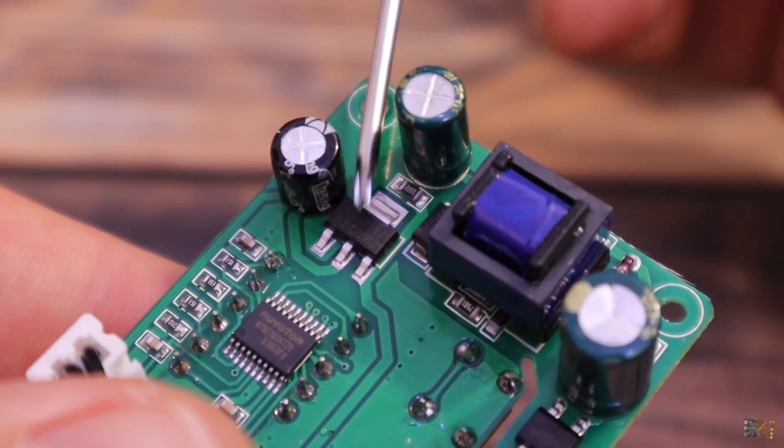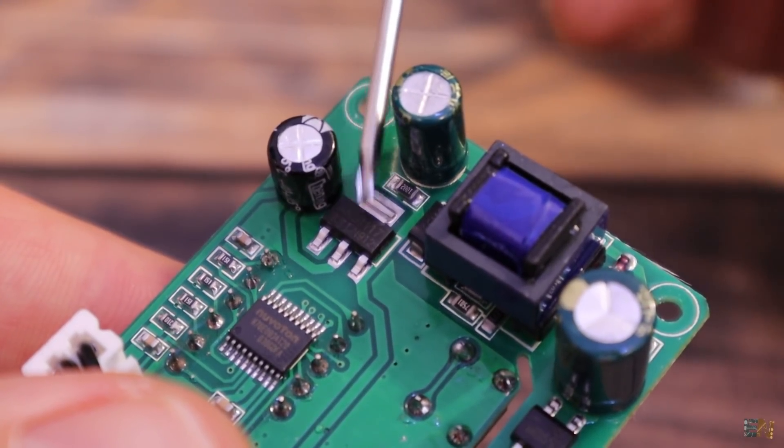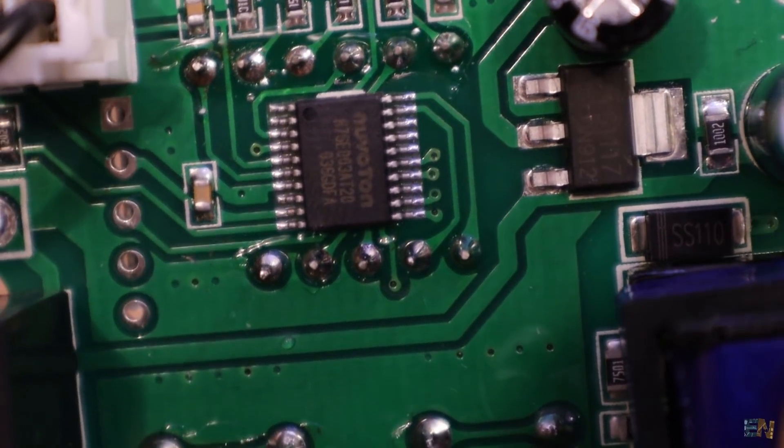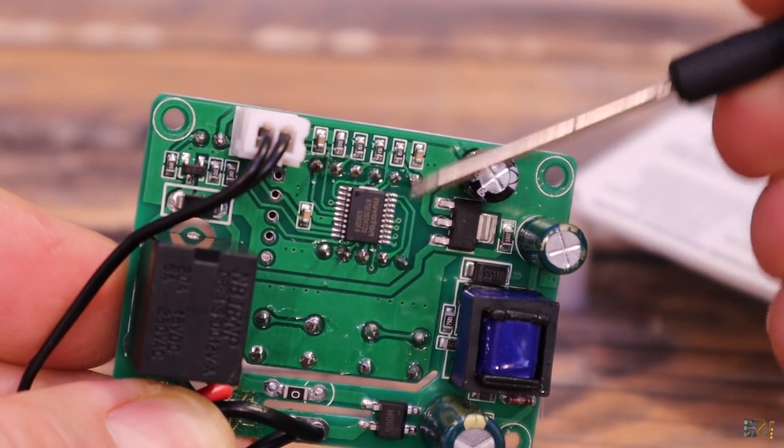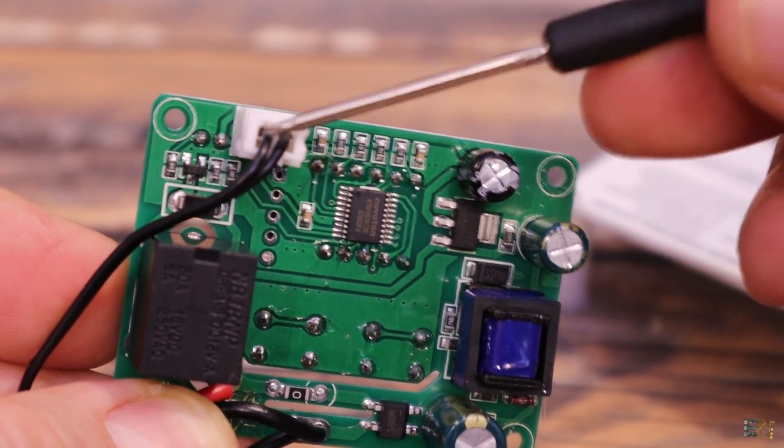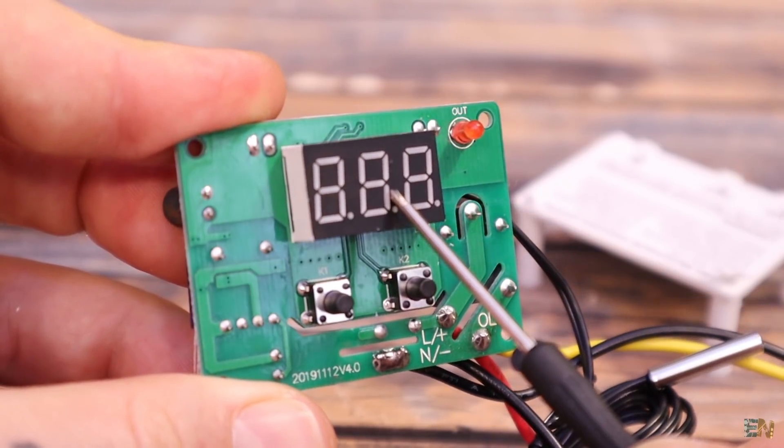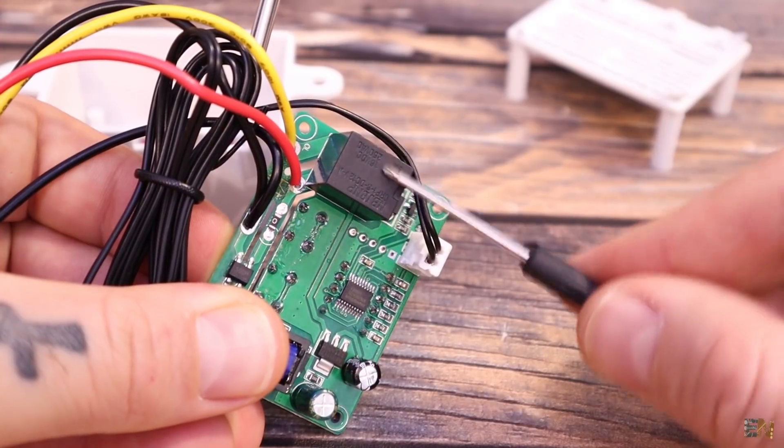I can also see a small 3.3V linear voltage regulator and that will supply the entire digital part. We have a small microcontroller and this will read the temperature from the thermocouple, read the push buttons and control the 7 segment display. Then it will also control this small relay here. Now here is the interesting part.